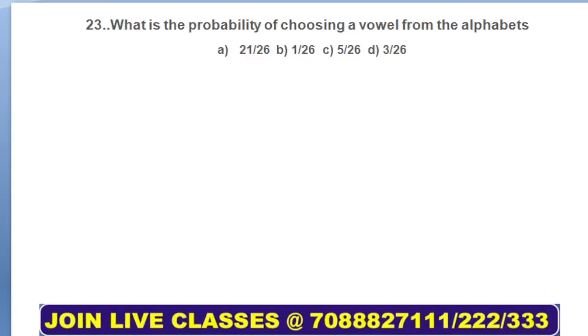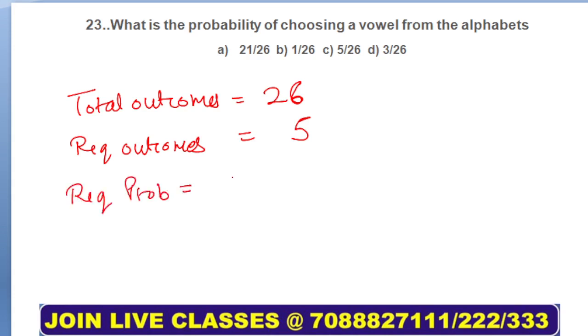Moving on to next: what is the probability of choosing a vowel from the alphabets? Total outcomes will be how many? We have 26 alphabets in English, right? We have total 26 outcomes and required outcomes is vowels. Vowels are 5, so required probability will be required outcomes upon total outcomes, 5 upon 26, which is your answer, option C.